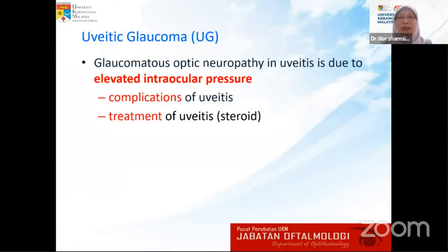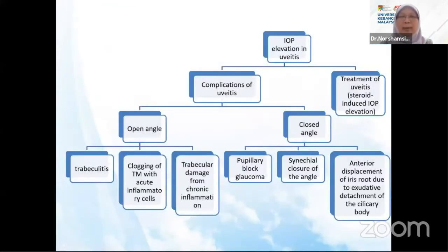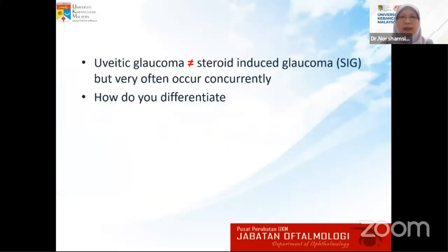Uveitic glaucoma is essentially a glaucomatous neuropathy which develops because of elevated intraocular pressure from complications of uveitis, or from treatment of uveitis through steroid use. It could be from the complication of uveitis or steroid use — either open-angle or closed-angle glaucoma from multiple causes. Uveitic glaucoma is not the same as steroid-induced glaucoma, but often they can occur concurrently.